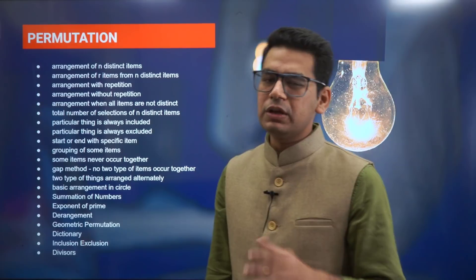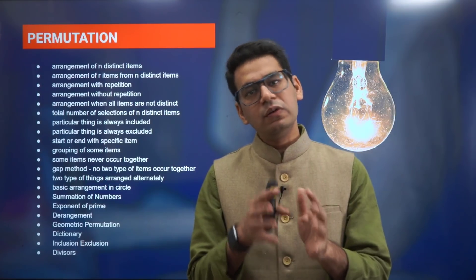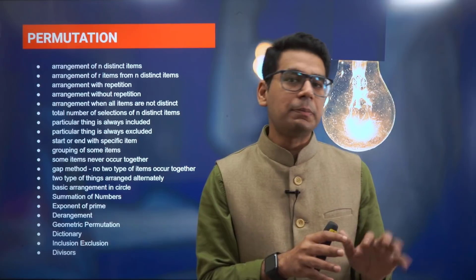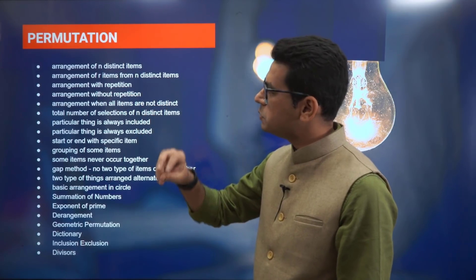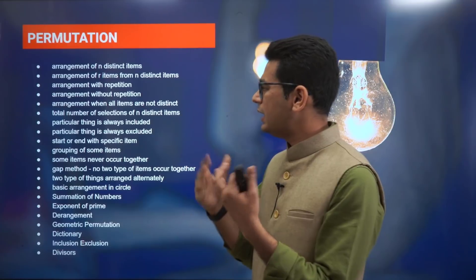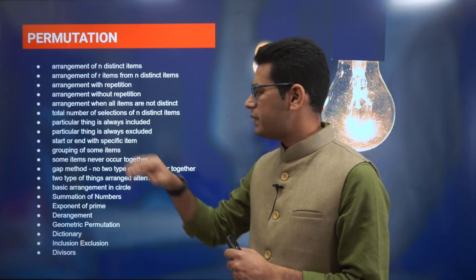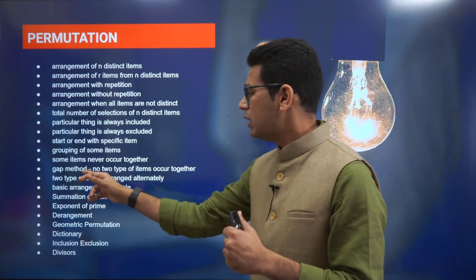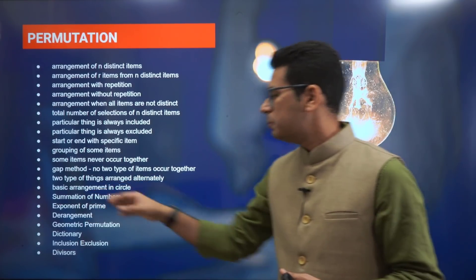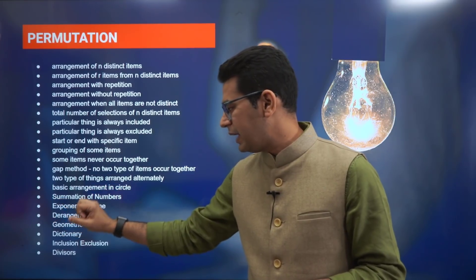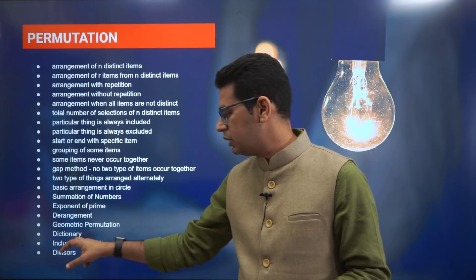The last chapter is permutation and combination — again a very large and important topic, and it's linked with probability, so being good at permutation automatically makes you more confident in probability. Topics include: arrangement of n distinct items, arrangement of r items from n items, arrangement with repetition and without repetition, arrangement when all items are not distinct, total number of selections of n items, particular things always included or excluded, start or end with a specific item, grouping of items, some items never occurring together, gap method, two or more types of items occurring together, alternating arrangements, basic arrangement in a circle, summation of numbers, exponent of prime in a factorial, geometry problems, dictionary problems, inclusion-exclusion, and number of divisors.